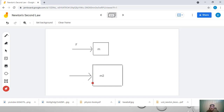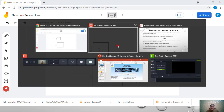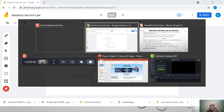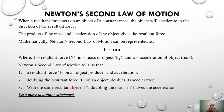So if we want to accelerate a heavier object more, we have to apply more force. When the mass is doubled with the same resultant force, the acceleration will be half of the previous value. That's about Newton's second law of motion.